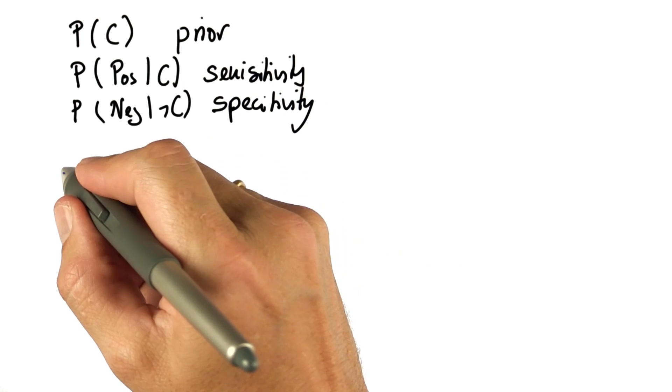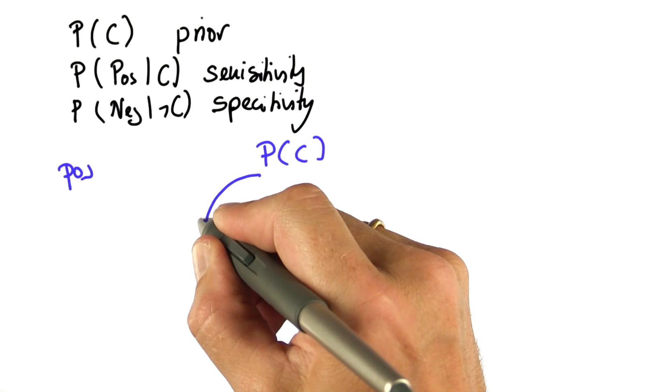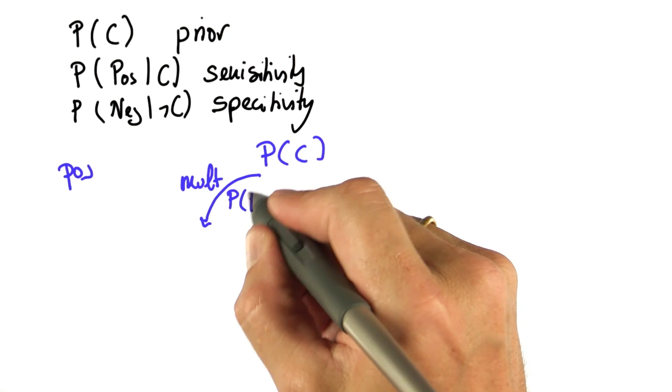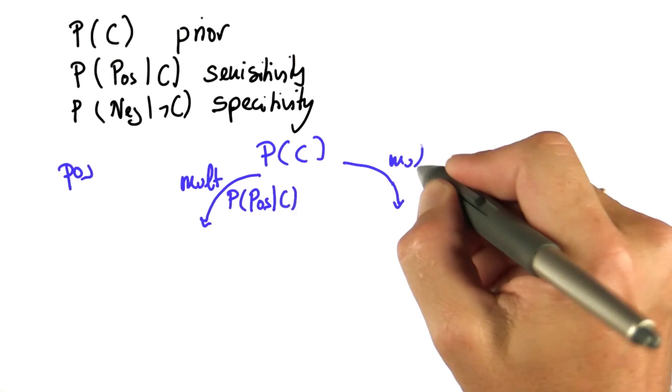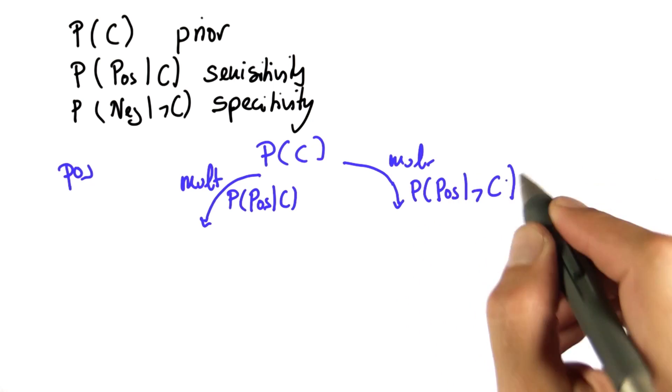When you receive, say, a positive test result, what you do is take your prior, multiply in the probability of this test result given C, and multiply in the probability of the test result given not C.